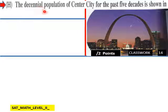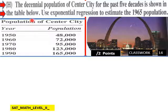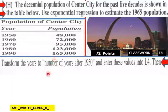H. The decennial population of Center City for the past five decades is shown in the table below. So every 10 years, here's our population here. Use exponential regression to estimate the 1965 population. We need to estimate our 1965 population from our exponential regression model that we could construct from these data values.